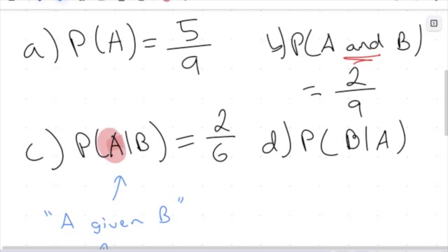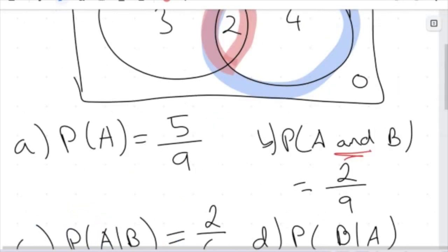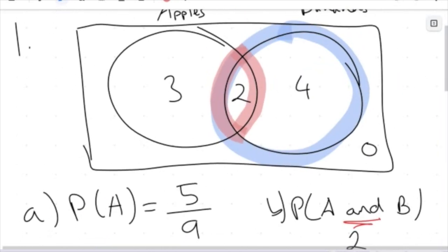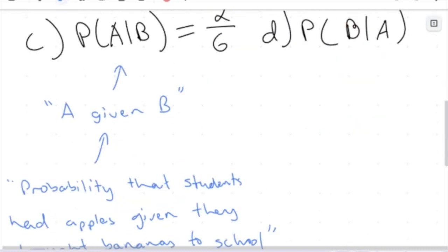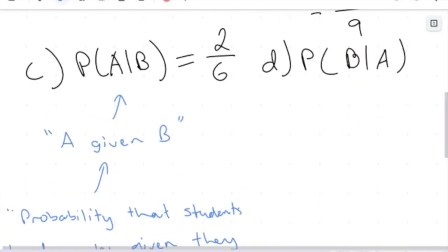We're looking for the students out of all the students that brought bananas — that's 6 of them — how many brought apples? So we are looking for a probability of 2 over 6. The probability of A given B: given that we're looking at students who brought bananas, 6 is the denominator, and 2 students brought apples. We can also simplify this to one third.